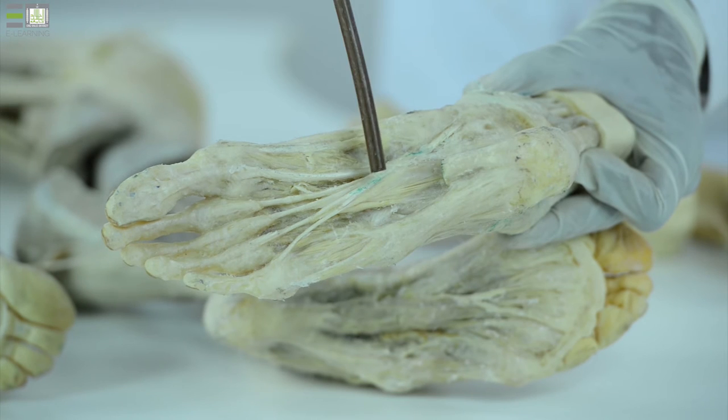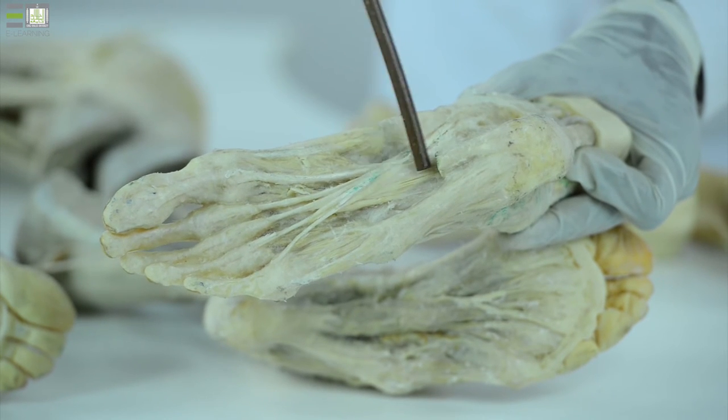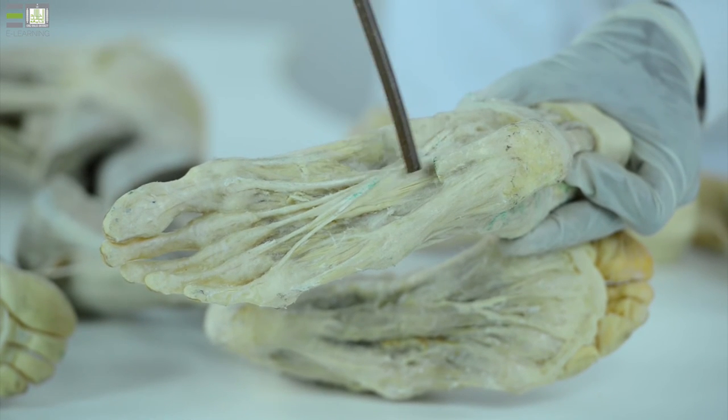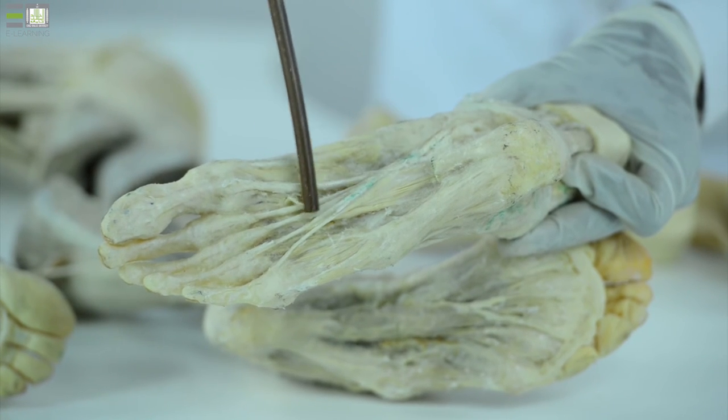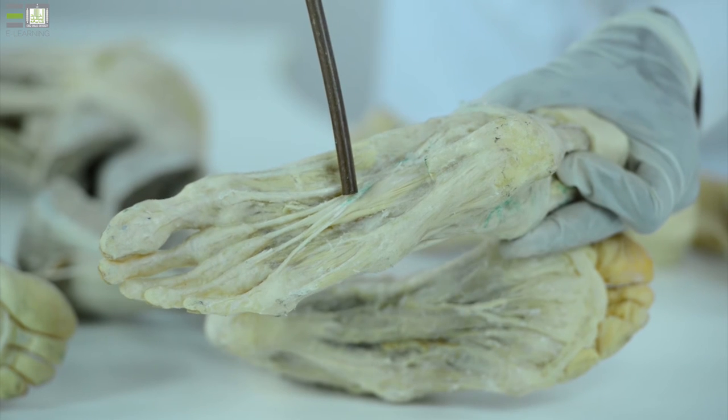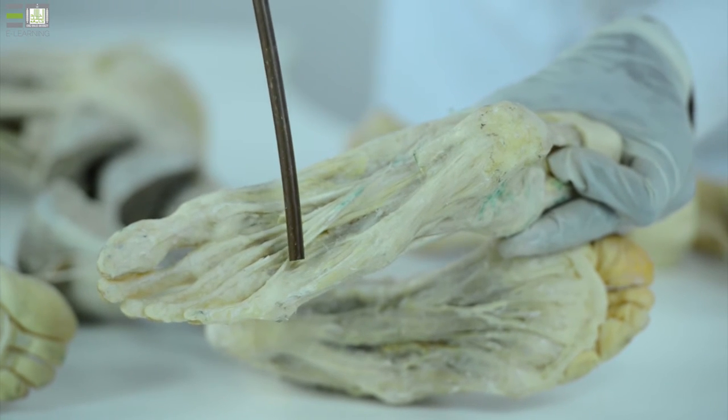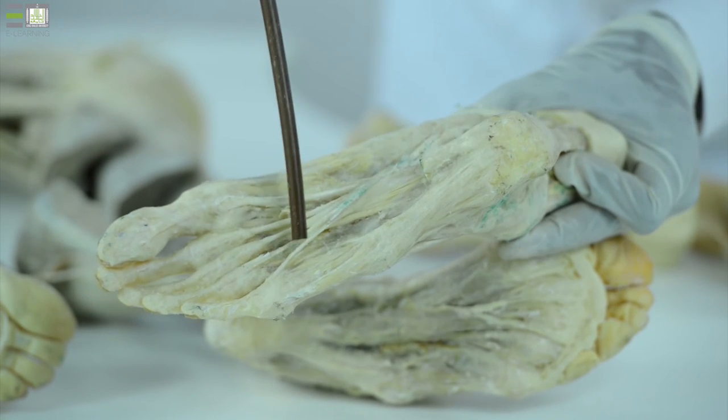It corrects the line of traction of the flexor digitorum longus tendon. And also from the margins of the tendons of the flexor digitorum longus, there are slender muscles called lumbrical muscles, which pass to the extensor retinaculum.